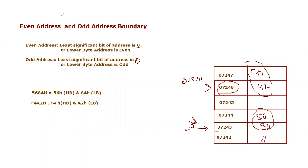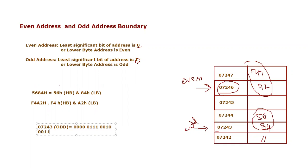So why was this 0 and 1 discussed? If you consider 07243 — of course it is an odd address — but if you convert it into binary, you will understand the concept. In hexadecimal: 0 is 0000, 1 is 0001, 2 is 0010, and 3 is 0011. So if you see the last bit, that is the least significant bit, and the least significant bit is 1 here. This 1 indicates it is an odd address.